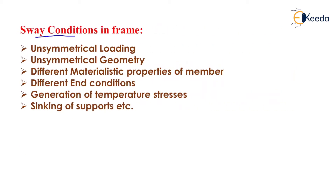What are the conditions in which a frame will undergo sway? The first condition is unsymmetrical loading. If in a frame the loading is unsymmetrical — for example, support A is fixed and support B is hinged — the frame will deflect in the rightward or leftward direction depending on the magnitude of load applied. Due to unsymmetrical loading, the frame will undergo sway.